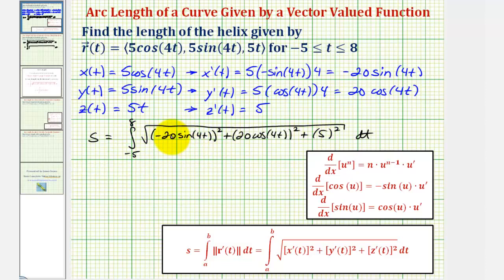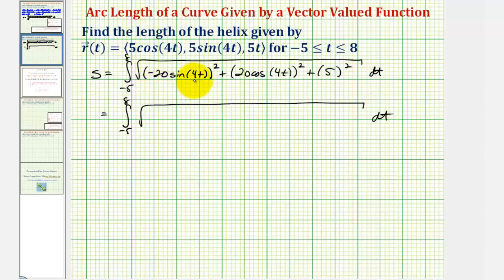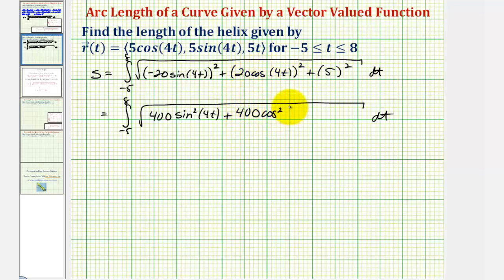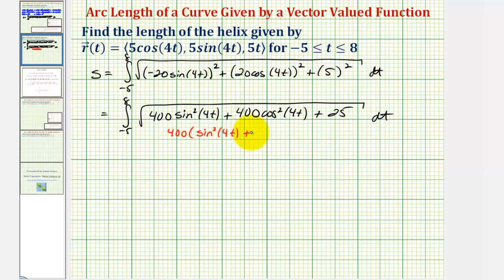We'll begin by simplifying this radicand. Squaring negative 20 sine four t gives 400 sine squared four t, and squaring 20 cosine four t gives 400 cosine squared four t, plus five squared is 25. These first two terms share a common factor of 400. Factoring out 400 gives 400 times the quantity sine squared four t plus cosine squared four t, which by the Pythagorean identity equals one. So this simplifies to 400 times one, or 400.